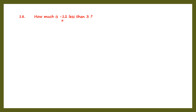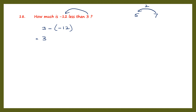Question 18: how much is minus 12 less than 3? Using a simple example: by how much is 5 less than 7? 7 minus 5 is 2. Similarly here, 3 is greater, so 3 minus minus 12. Opening the bracket — minus before a bracket, change the sign — it becomes plus. So 3 plus 12 is 15. The answer is 15; minus 12 is 15 less than 3.